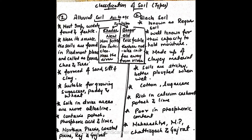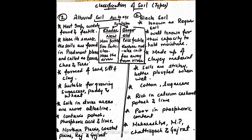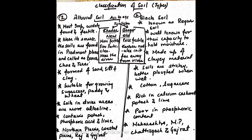Now let's discuss the important points of alluvial soil. It is the most important, widely found and fertile soil. Near its source, the soils are found in Piedmont plains and called as Bhabar, Duar and Terai, formed of sand, silt and clay. This soil is suitable for growing sugarcane, paddy and wheat. In drier areas, these soils are more alkaline. Contains potash, phosphoric acid and lime. Areas where these soils are found: northern plains, coastal plains, Rajasthan and Gujarat.